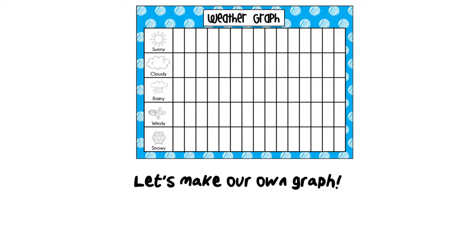Today when I went outside I saw that it was sunny, so I want to show that today was sunny. I'm going to go to the first box outside of sunny and color that in. So we have one sunny day so far. When I look at my graph, I can see there are more sunny days than cloudy, rainy, windy, or snowy days. Every day we're going to add more to our weather graph, and when it gets filled up we can do comparisons and talk about less than and greater than.